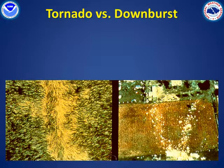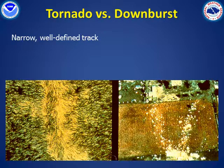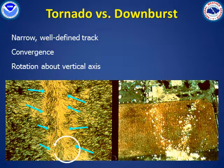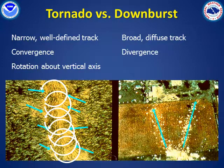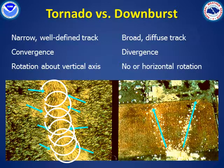If photos or video of the event are available, such as videos of recent tornadoes, determining what type of event caused the damage is straightforward. If photos or video are not available, then the survey team will study the damage path to determine whether a tornado or straight winds caused the damage. Tornadoes will typically have a narrow, well-defined track. Debris and damage will be blown towards the center of the track — this is called convergence. The damage may also exhibit evidence of rotation about a vertical axis as the tornado moves along. Straight wind events or downbursts typically have a track that's more broad and diffuse. Damage will spread out from the center of the track, called divergence, and the debris will exhibit evidence of no rotation or of rotation about a horizontal axis.